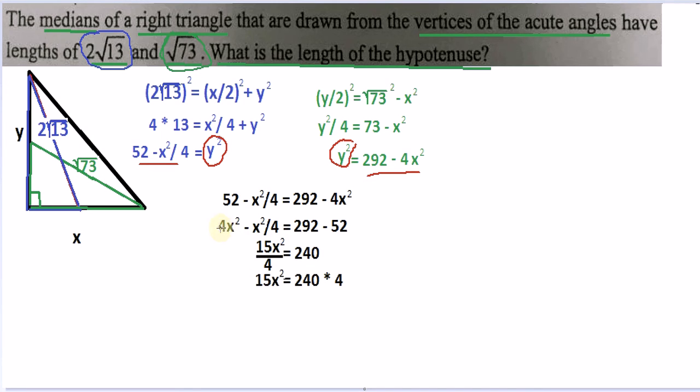And when we do that, we get 16 over 4. We subtract the x squared over 4. We get 15x squared over 4. And, of course, we just go ahead and do this math here. And then once we do that, we have 15x squared equals 240 times 4, because we multiply both sides by 4.